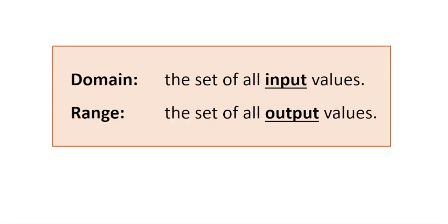A lot of students get very confused by this, they can't remember the definition, but what I've done is I've tried to highlight the thing that's really important. Domain is the set of all input values, and the range is the set of all output values. Domain is the inputs, range is the outputs. Since the domain is the set of all input values we can just refer to it as the x's, and since the range is the set of all output values we can refer to that as the y's. So domain is the x values, the range is the y values.